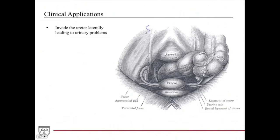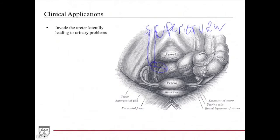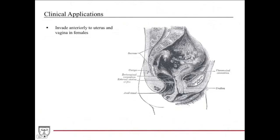Looking from a superior view into the pelvis, the rectum lies just posterior to the uterus. In both males and females, it can invade laterally into the ureter, leading to urinary problems. In females, if it invades anteriorly, it can invade into the uterus, cervix, or vagina, since these structures are just anterior to the rectum.